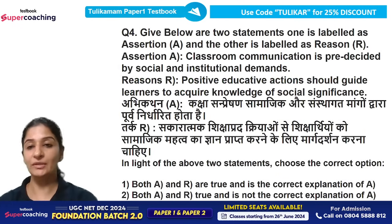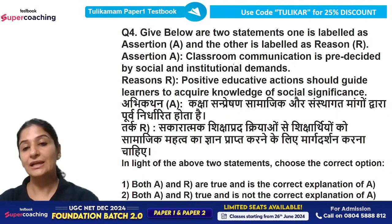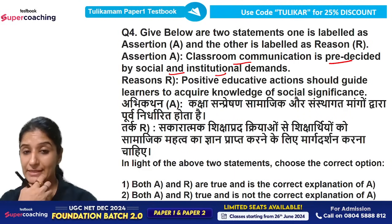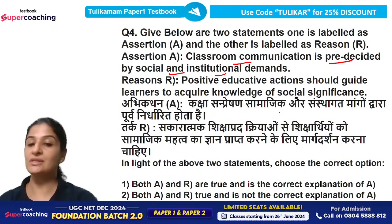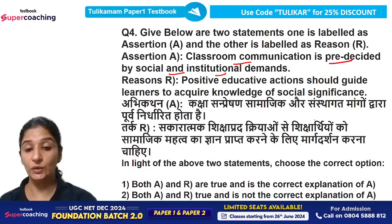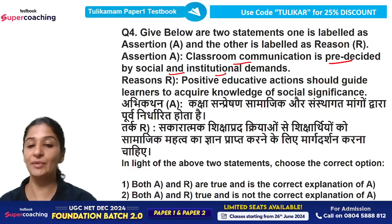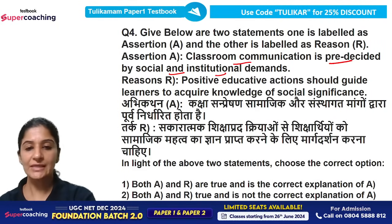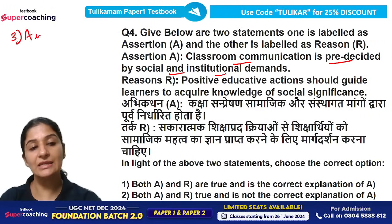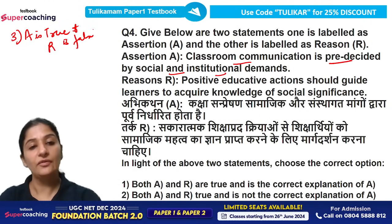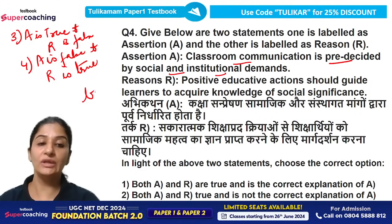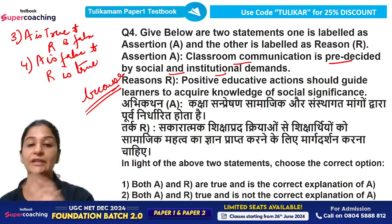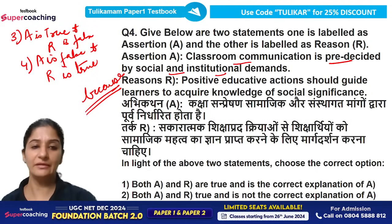Question 4 is assertion-reason based. Assertion: Classroom communication is pre-decided by social and institutional demands. Reason: Because positive educative actions should guide learners to acquire knowledge of social significance. Options C and D: C is 'A is true and R is false'; D is 'A is false and R is true.' When solving assertion-reason questions, check if the reason justifies the assertion — if both support each other, that's the right answer.